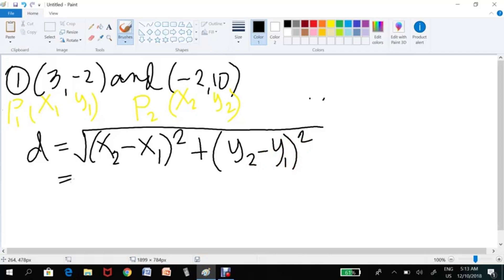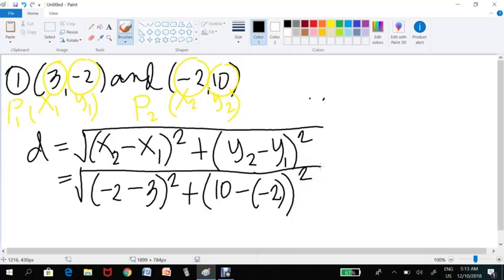So we have the square root of direct substitution. Our x₂ is -2. So we have -2 minus x₁, which is 3. Minus 3 squared, plus y₂, which is 10. 10 minus our y₁, which is -2. So minus -2 squared. Don't forget that square root.